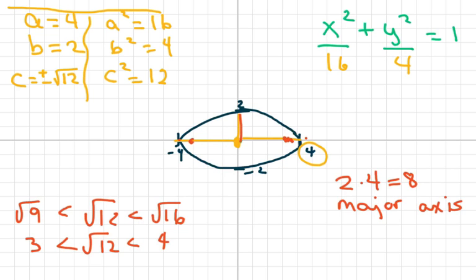And the length of the minor is 2 plus 2 is 4, which is 2 times 2 equals 4. That's the length of your minor axis.